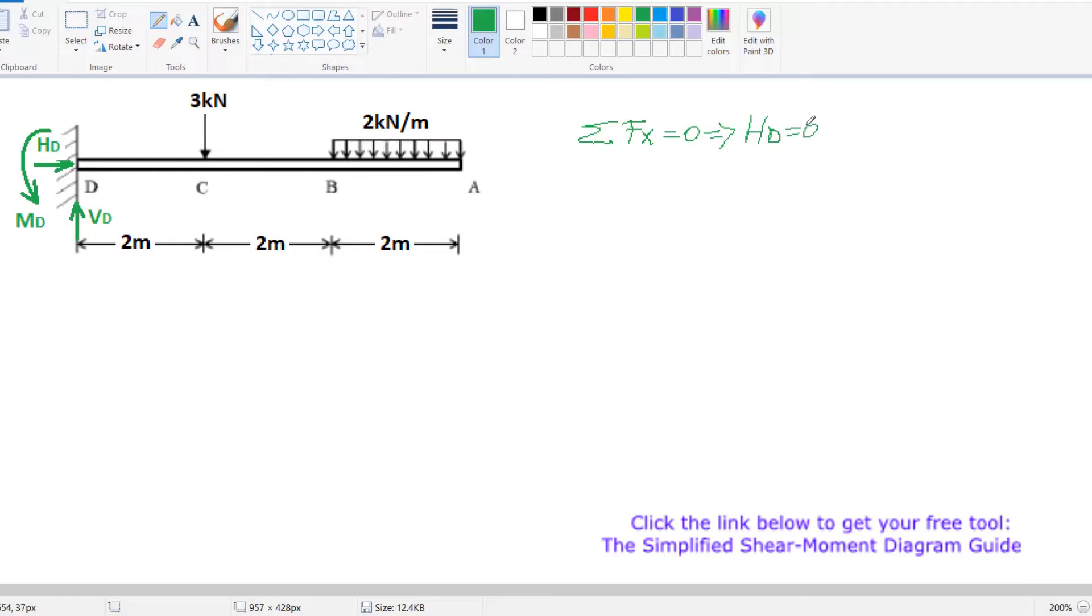Next, we will calculate the vertical reaction VD. Sum of forces in Y direction equals zero. That means VD minus our point load 3 kN and minus our uniformly distributed load which is 2 kN per meter times 2 meters equals zero.